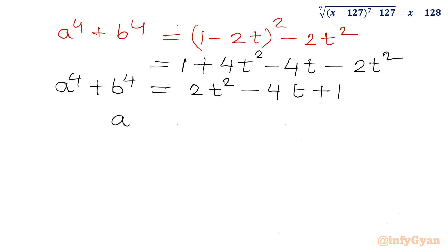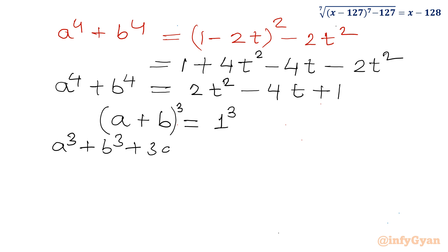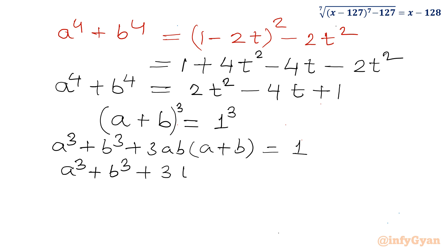Now I will consider cubing of equation 1: a plus b equal to 1. Cubing both sides gives a cube plus b cube plus 3ab times (a plus b) equal to 1 cube, which means 1. Since ab was t, I write a cube plus b cube plus 3t times 1 equals 1, or a cube plus b cube equals 1 minus 3t.